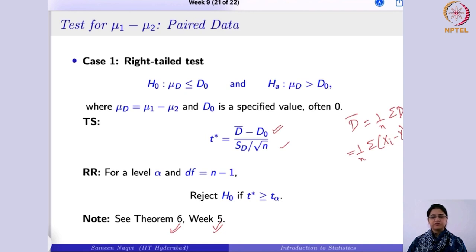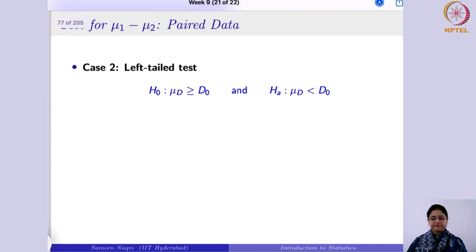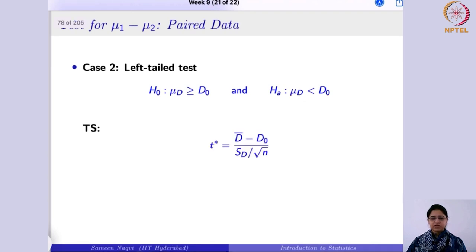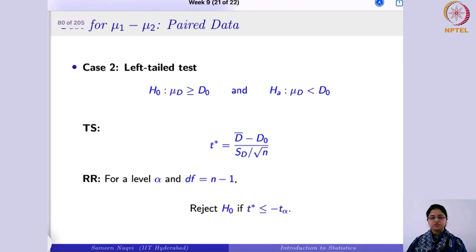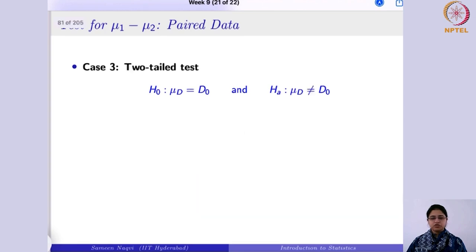You reject the null hypothesis if the test statistic obtained is greater than tα, the critical value. Likewise, for the left-tail test, the alternative hypothesis states that the difference of the two means is less than d-naught. The test statistic remains the same, but the rejection region changes because you are now working with the lower tail — refer to the same theorem from the previous slide.